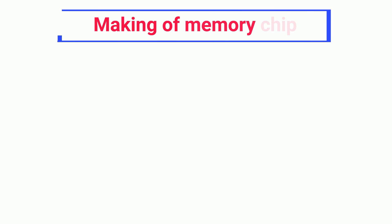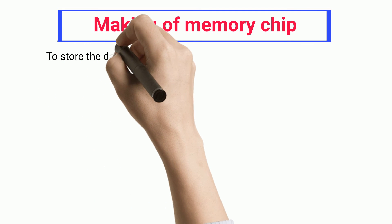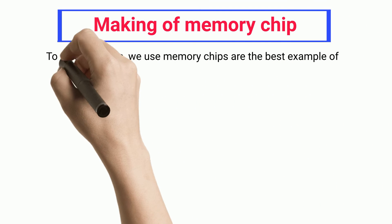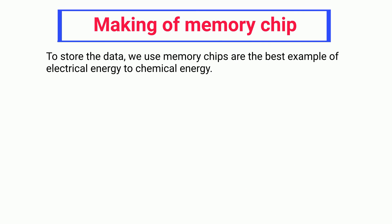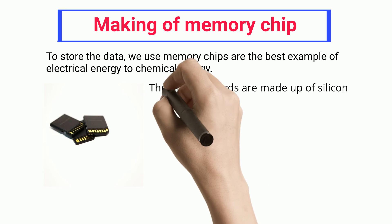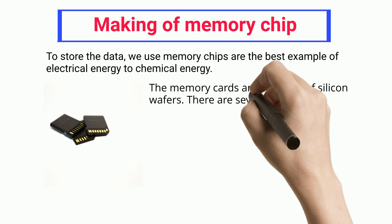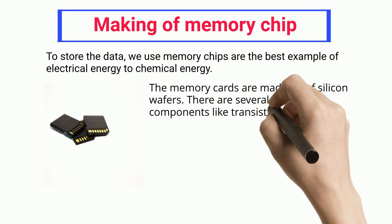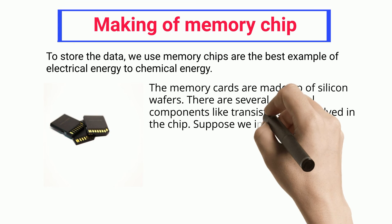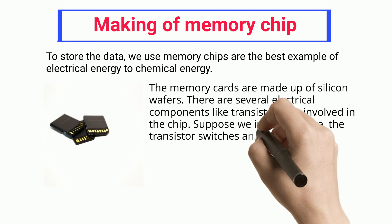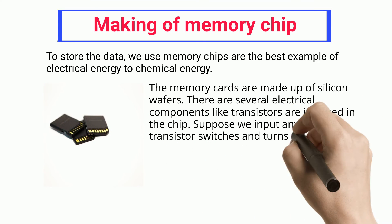Making of Memory Chips. To store data, memory chips are the best example of electrical energy to chemical energy. The memory cards are made up of silicon wafers, and there are several electrical components like transistors involved in the chip. Suppose we input any data, the transistor switches and turns on.